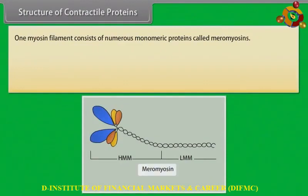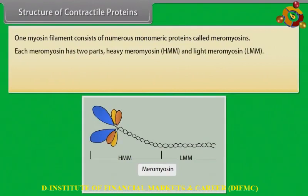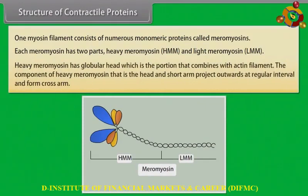One myosin filament consists of numerous monomeric proteins called meromyosins. Each meromyosin has two parts: heavy meromyosin (HMM) and light meromyosin (LMM). Heavy meromyosin has a globular head, which is the portion that combines with the actin filament. The component of heavy meromyosin — the head and short arm — projects outward at regular intervals and forms cross bridges.